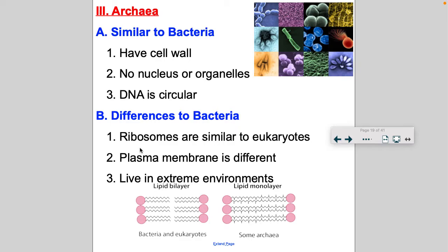Differences from bacteria: the ribosomes of archaea are similar to eukaryotes, not prokaryotes. Their plasma membrane is also different — bacteria and eukarya have a lipid bilayer, two phospholipid layers in the cell membrane. With archaea, it is one continuous layer with no break. And the big difference between archaea and bacteria is that archaea live in extreme environments.